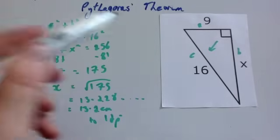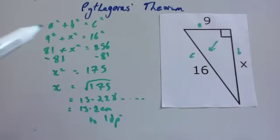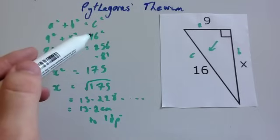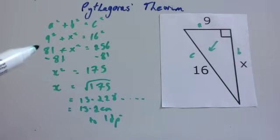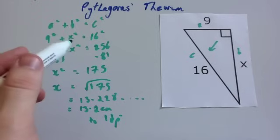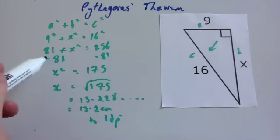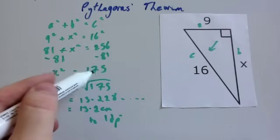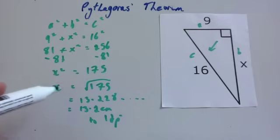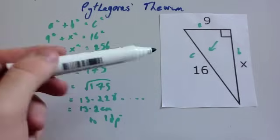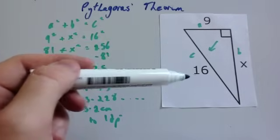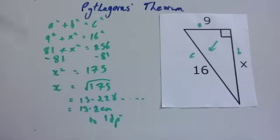Just run through the steps again: label the sides a, b, and c. Put them into Pythagoras' theorem — a was 9, so you square that to get 81; b was x, so you get x squared; and c was 16, so you square that to get 256. Then solve it like any equation — you want x on one side and numbers on the other. Take away 81 from both sides to get x squared equals 175. Then square root both sides to get x equals the square root of 175. Alternatively, when finding a shorter side, square the longest side and the known short side, subtract them, then square root the result.